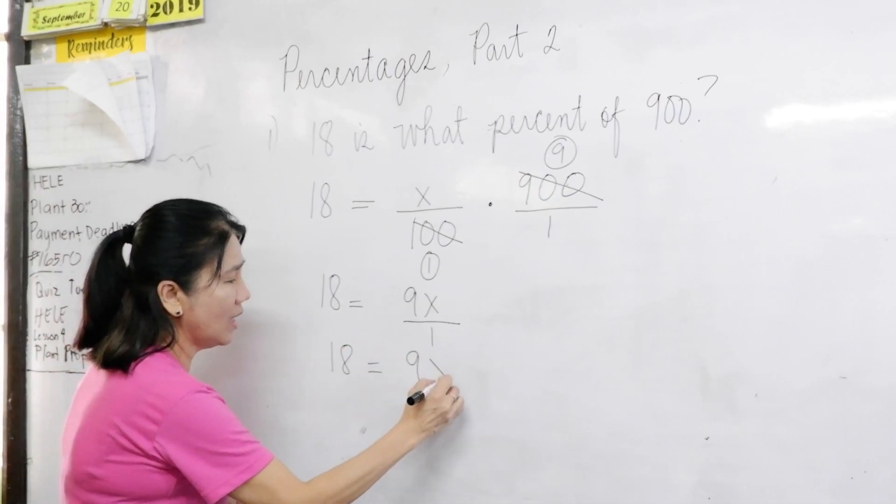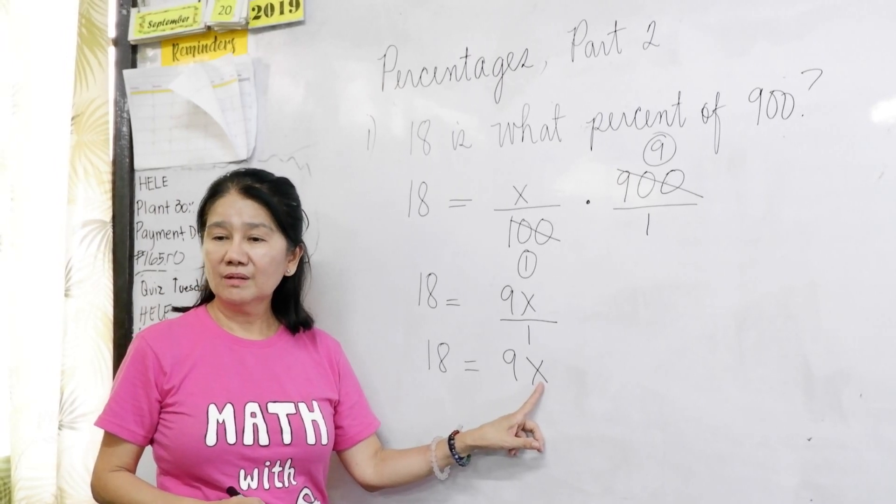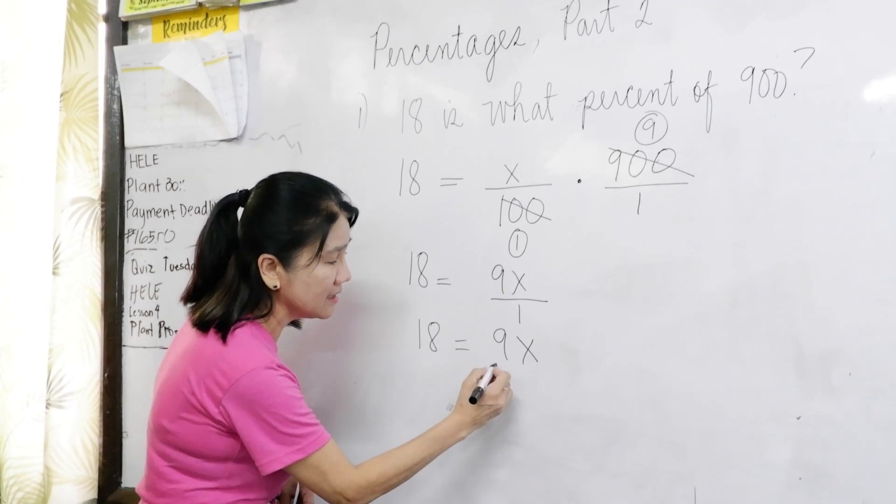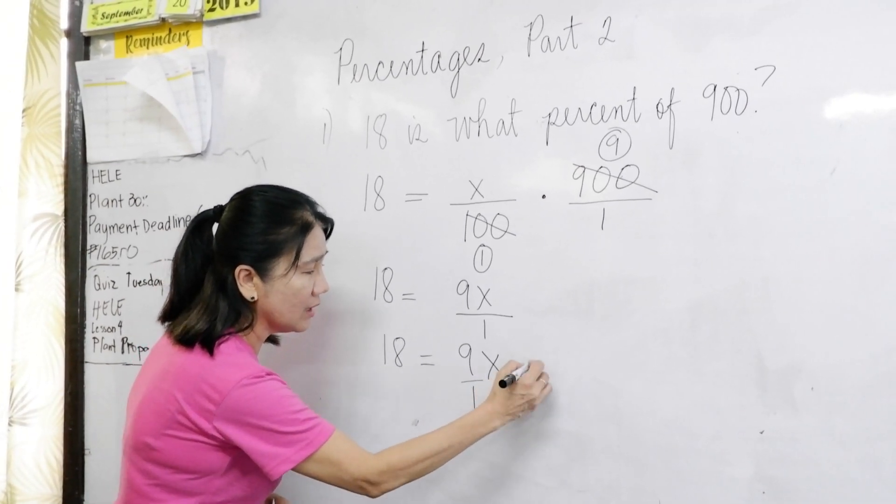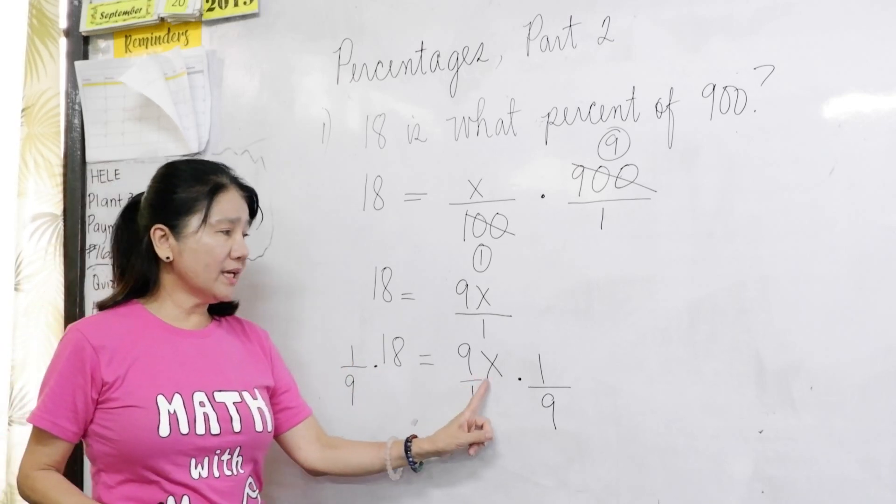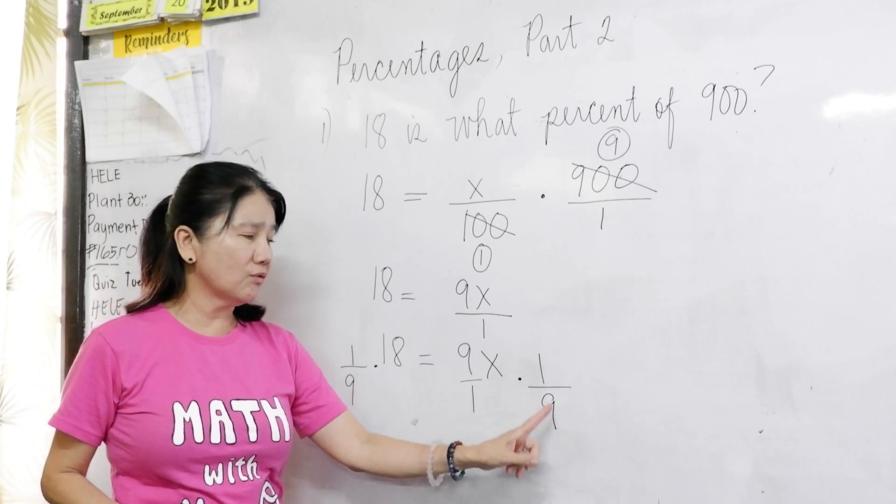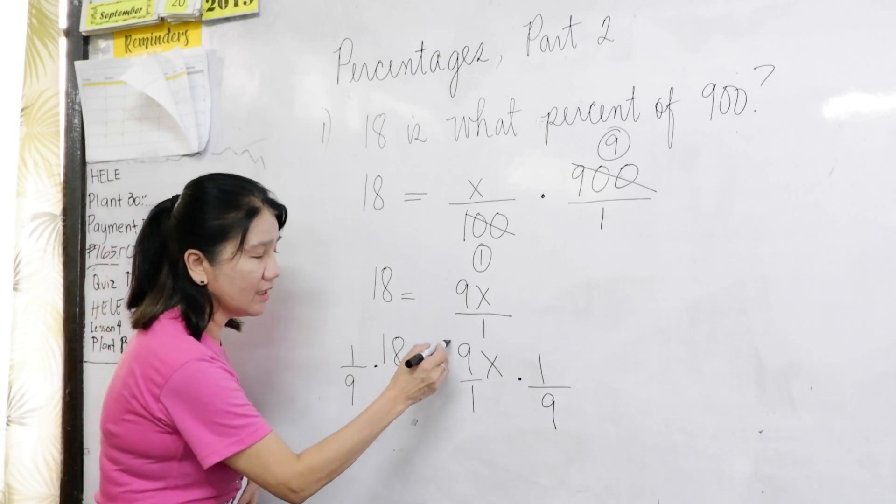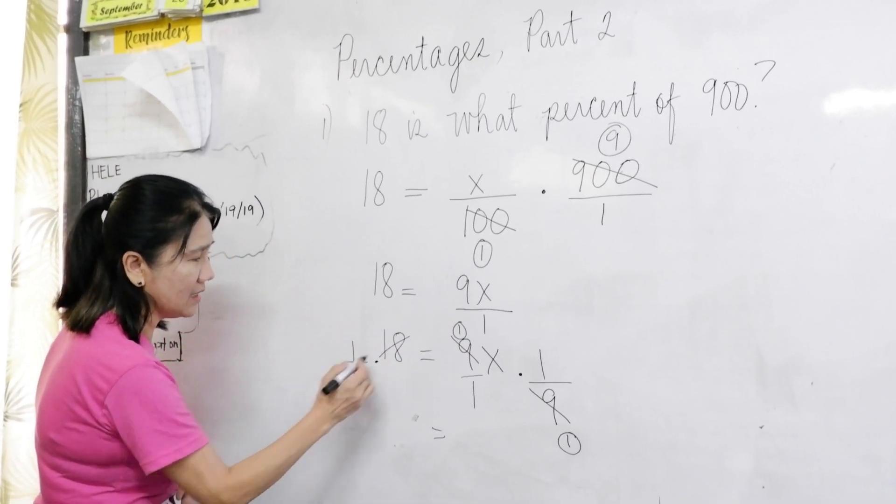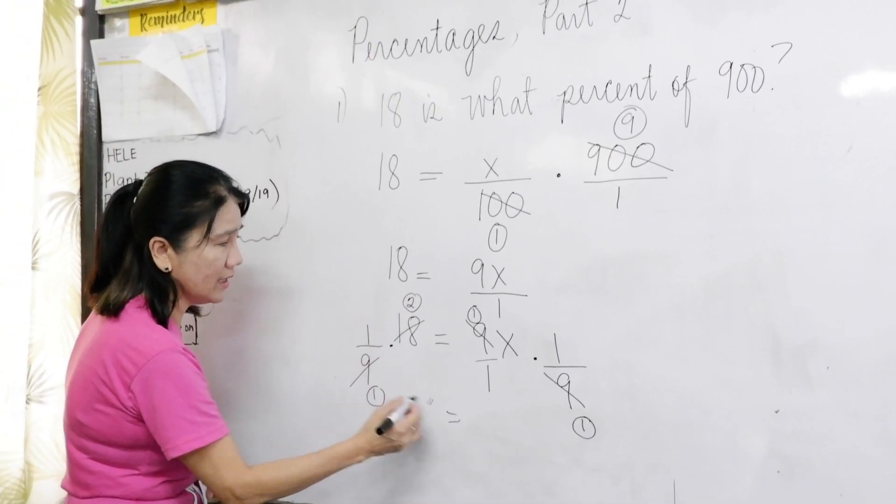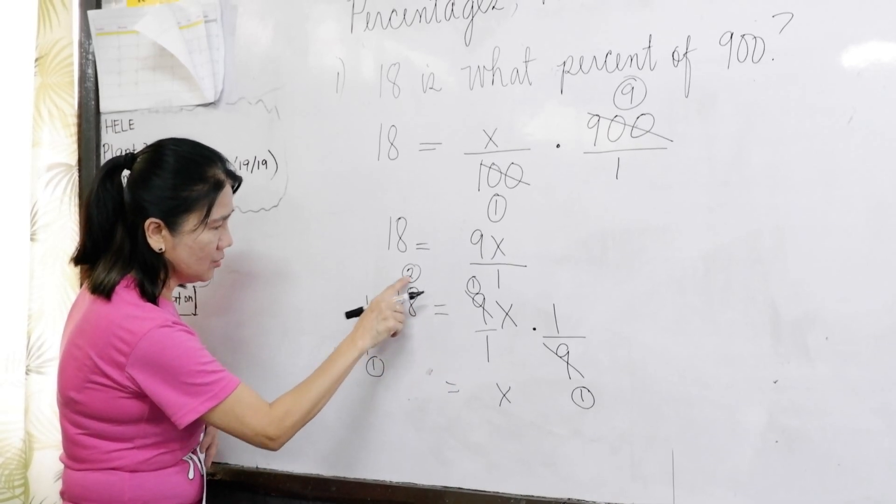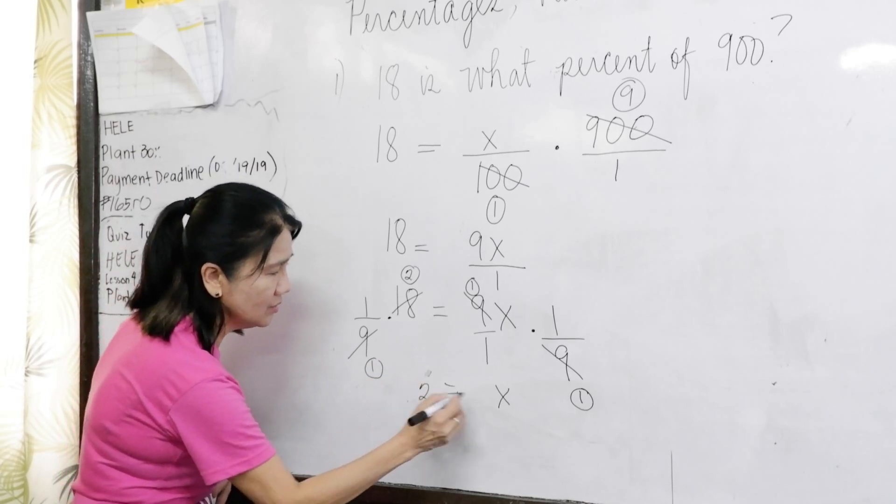So, eighteen is equal to nine x. So, how do we isolate x here? We multiply the reciprocal of nine. Remember, nine is nine over one. You multiply the reciprocal of nine which is one over nine on both sides. Both sides. And then, now we can cancel nine and nine. Automatically, we get one here. So, eighteen divided by nine gives us two. Nine divided by nine gives us one. So, here, one times x times one is x over one times one is still x. And then, two times one is two over one. That gives us a two. So, x is equal to two.